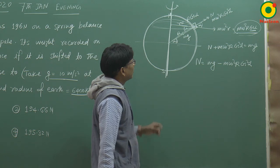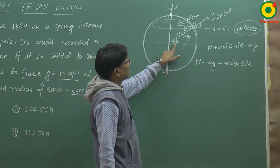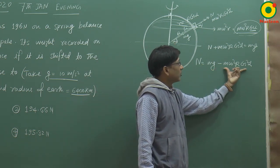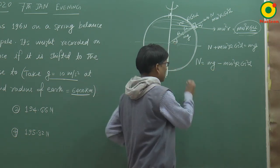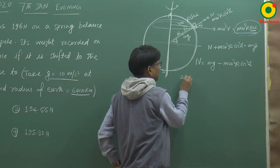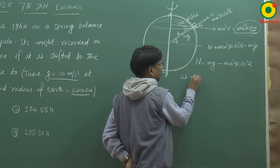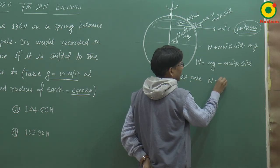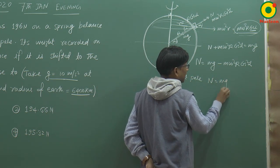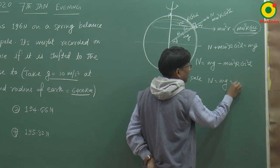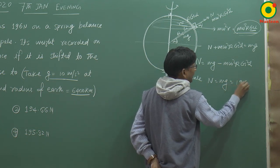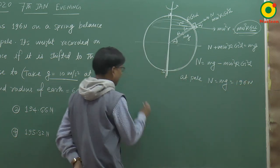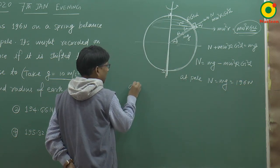Pole पर α = 90° होगा, तो cos²α = 0 और वह term zero हो जाएगा। At pole: N = mg = 196 Newton — जो question में दिया गया है।